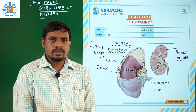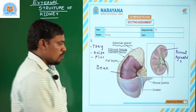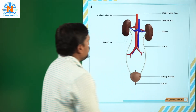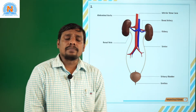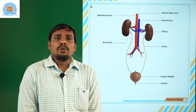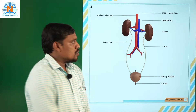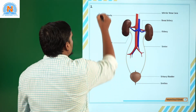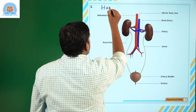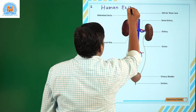This is the external morphology of human kidney. Moving on to the next question: demonstrate the human excretory system or human kidneys. If you look at the human excretory system, it generally looks like this.